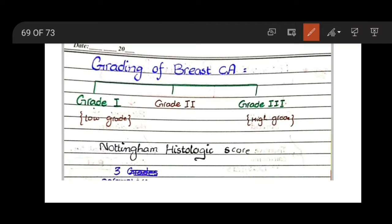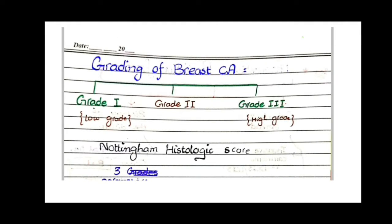Tumors that are well differentiated are grade 1 or low grade, and those that are undifferentiated are grade 3 or high grade. Grade 3 or high grade tumors have a worse prognosis.